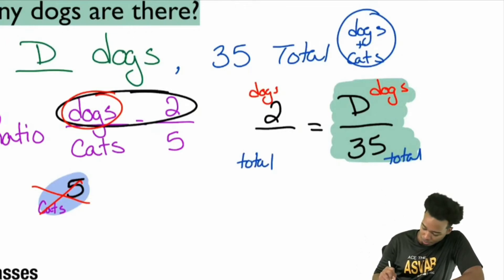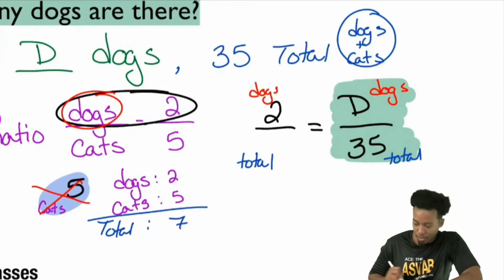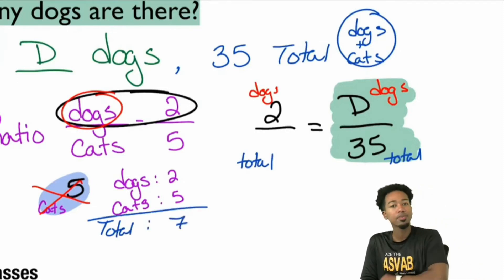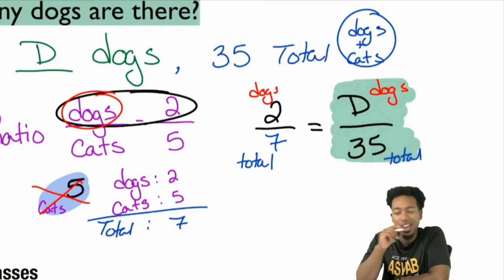So again, if you have two dogs, let me write this here. If I have two dogs for every five cats, that means my total, let me write that in blue, my total is seven. Does that make sense, everybody? How I got the seven? The seven is how I'm going to get that. Because now I'm comparing dogs to total, dogs to total. Now I have an appropriate proportion. Now I have a proportion that I'm proud to use because I know it'll work.